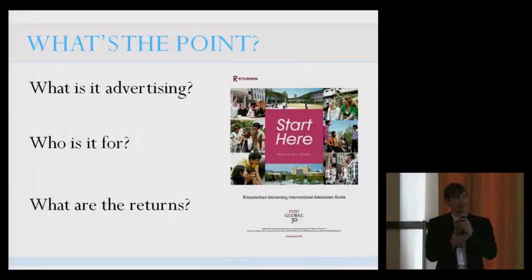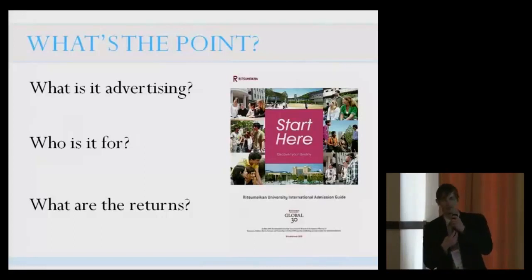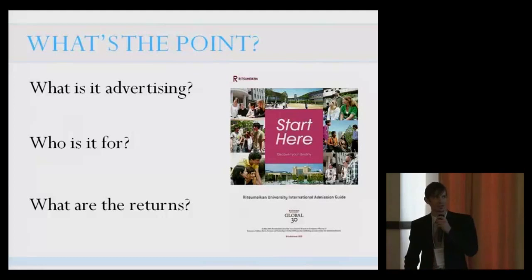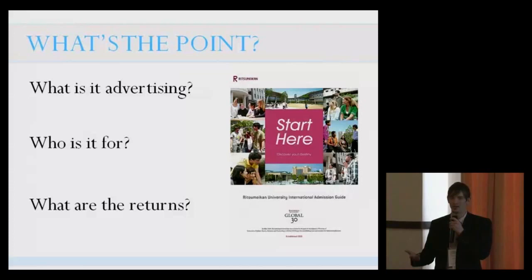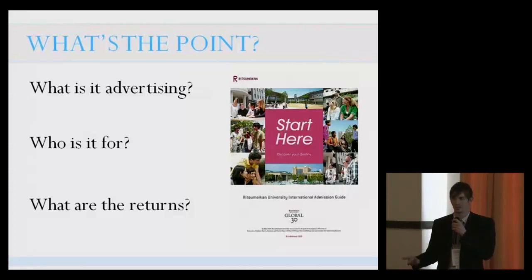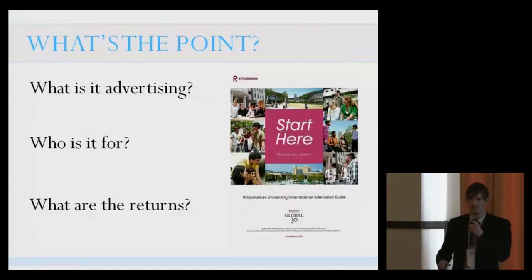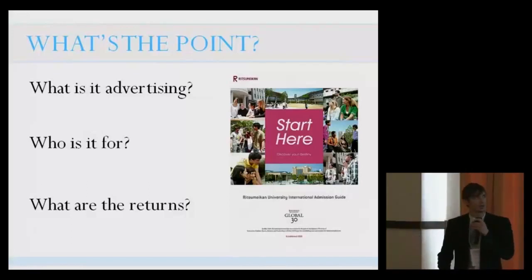I found that sometimes this isn't the case. In all humility, I'll bring up the Ritsumeikan pamphlet. It starts and says 'Ritsumeikan University International Admissions Guide.' But if you actually look inside, there's only about 10% of the contents about actual international admissions — how to apply and who to contact. A lot of it has to do with G30 and Ritsumeikan history. So this is something that I'm trying to get everybody to think about — having a purpose behind putting money towards these projects. Who is it for? That goes with purpose.